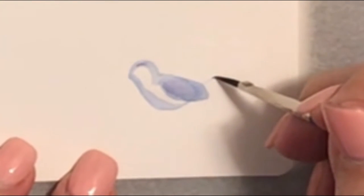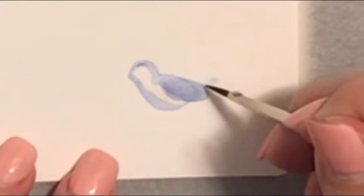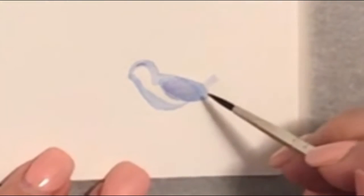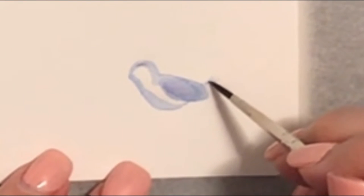That's the secret with watercolors, is getting the exact right amount of water. All right, there's the body of the bird. Now I'm gonna put his tail, I guess I'll do that in blue. Just a little thing, stick it up. Okay, maybe I'll add a little purple to that. You just need very little paint. All right, so we'll let that dry. I'll use my blow dryer.